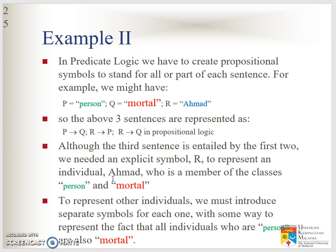Going back to the example in predicate logic: in propositional logic we have to create a propositional symbol to stand for all parts of a sentence — P is a person, Q is mortal, R is Ahmad. The three sentences are represented as P then Q, R then P, and R then Q. Although the third sentence is entailed by the first two, we need an explicit symbol R to represent Ahmad. That's why we use predicate logic, where we can generalize the idea of 'every person' and say Ahmad is a subset of a person.